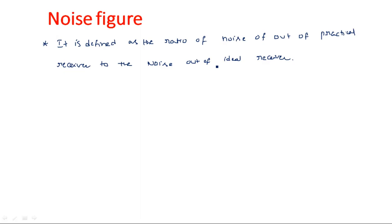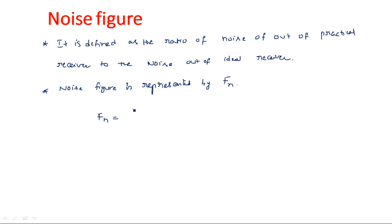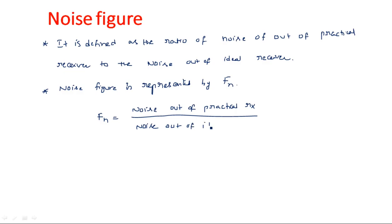Noise figure is represented by F_n. So F_n is equal to noise out of practical receiver divided by noise out of ideal receiver. This is one way of defining noise figure.